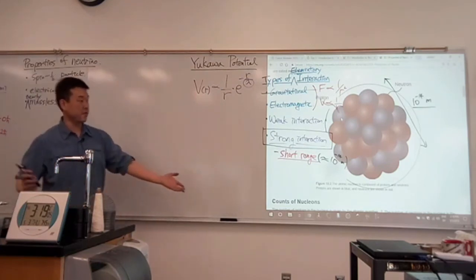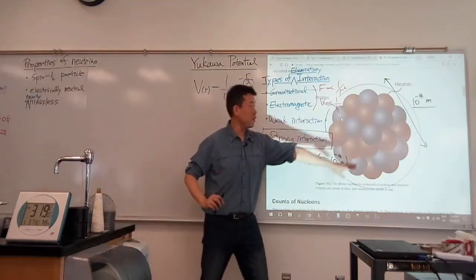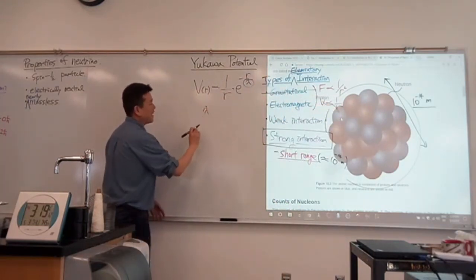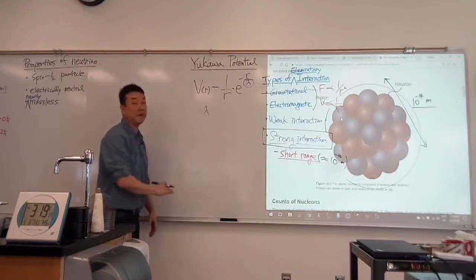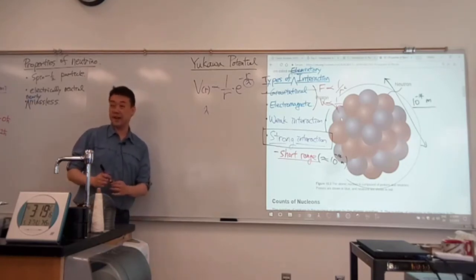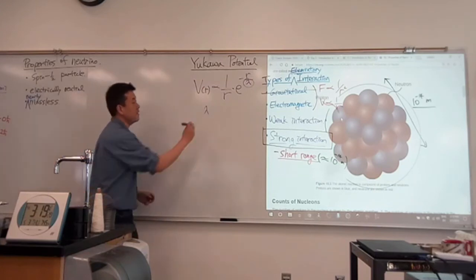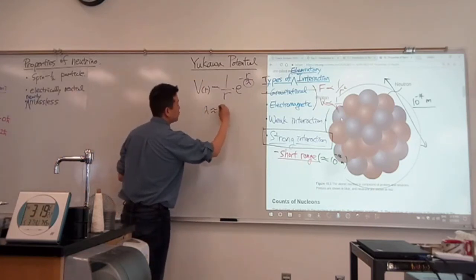So he was hypothesizing that the potential that can be associated with this might take this form: e to the minus distance over some characteristic length. And based on this experimental observation of the nucleus size, what he would guess is, well, this characteristic length, maybe it's about 10 to minus 14 meters.